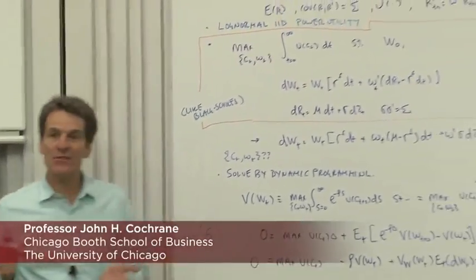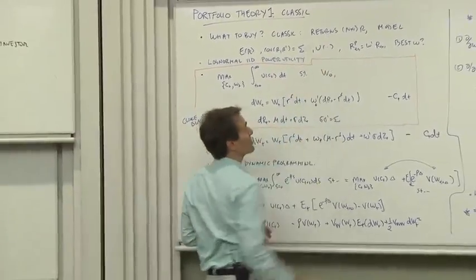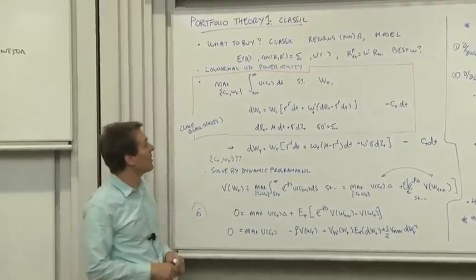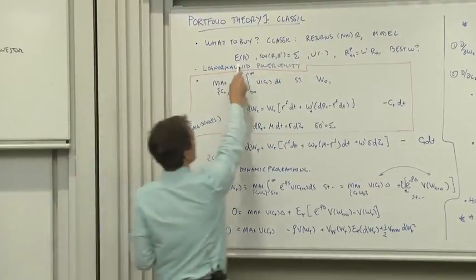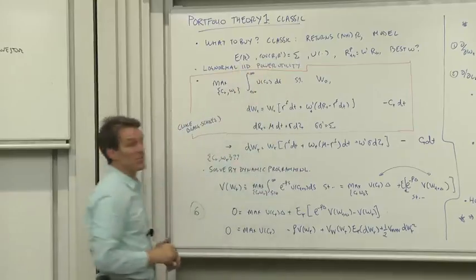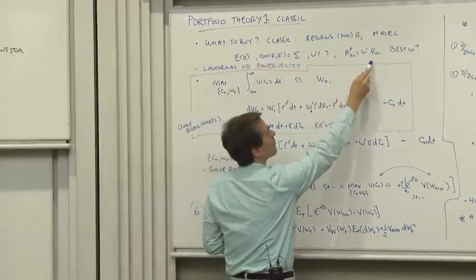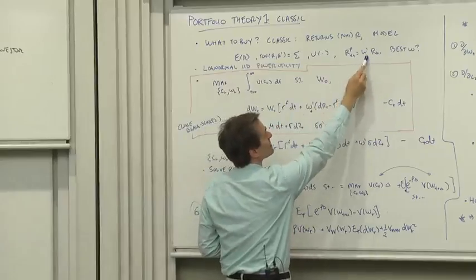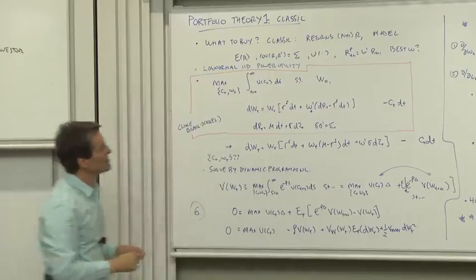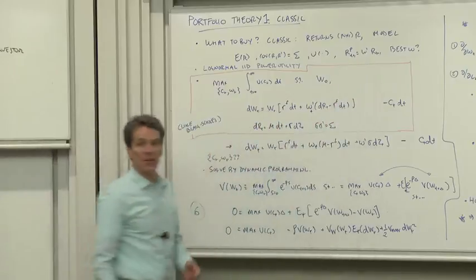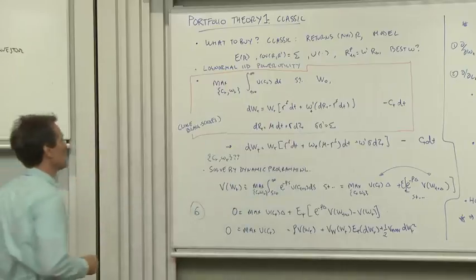Let me pose that question to start with in the classic way. You're facing a set of returns, maybe stocks, n by one vector of returns r. You have in mind a statistical model, the mean of returns, the covariance matrix of returns. You know your utility function, and you can form portfolios of the returns. W is the portfolio weights, and the returns are the ones you're facing, and that's the rate of return on your portfolio. Your job is find the best set of portfolio weights. Where should you put your money?